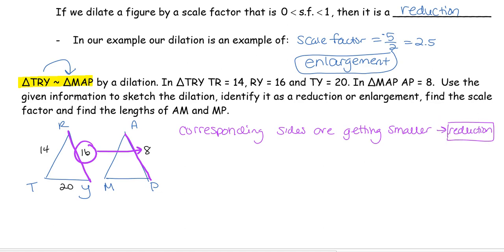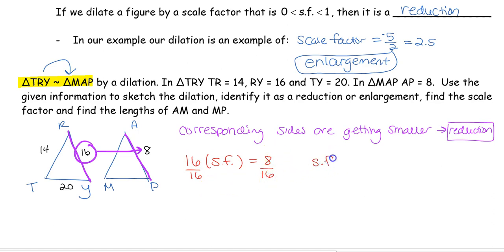The second part: find the scale factor. The scale factor is what we multiplied by — we had 16, and we want to get 8. To isolate the scale factor, we divide: 8 divided by 16. That gives a scale factor of 1 half. This supports that it's a reduction, because 1 half is a fraction between 0 and 1.